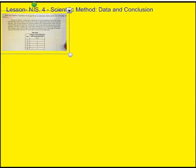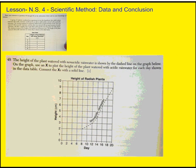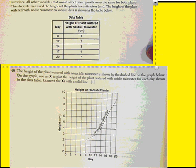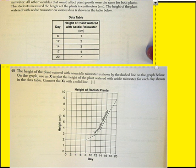One was watered with non-acidic rainwater and the other was watered with an equal amount of acidic rainwater. All other variables that would affect plant growth were the same for both plants. The students measured the heights of the plants in centimeters. The height of the plant watered with acidic rainwater on various days is shown in the table below. All right, and they give you some data. Now I'm going to shrink that down so we can move on to the next part, but I'll leave it there so we can access it if we need to. So here's the next part. It says the height of the plant watered with non-acidic rainwater is shown by the dashed line on the graph below. On the graph, use an X to plot the height of the plant watered with acidic rainwater for each day shown on the data table. Connect the X's with a solid line.